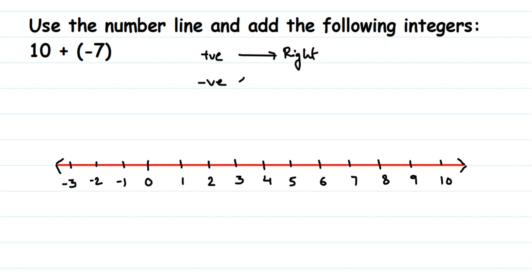Here we have 10 plus minus 7. So I'm going to locate 10 here. I've taken a number line here. Zero I have taken here, and I have taken more positive numbers than negative numbers because the answer will be positive.